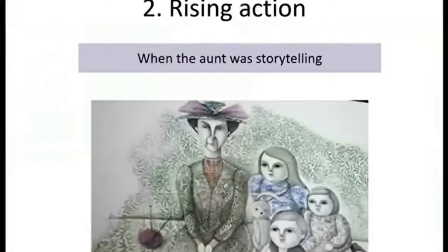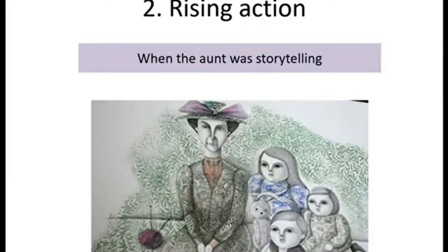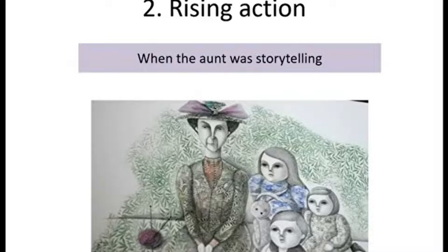Now for the Rising Action: when the aunt was storytelling. 'Come over here to listen to a story,' said the aunt. The children moved listlessly toward the aunt's end of the carriage — evidently her reputation as a storyteller did not rank high in their estimation. In a low, confidential voice, interrupted at frequent intervals by loud, pertinent questioning from her listeners, she began an enterprising and deplorably uninteresting story about a little girl who was good and made friends with everyone on account of her goodness.